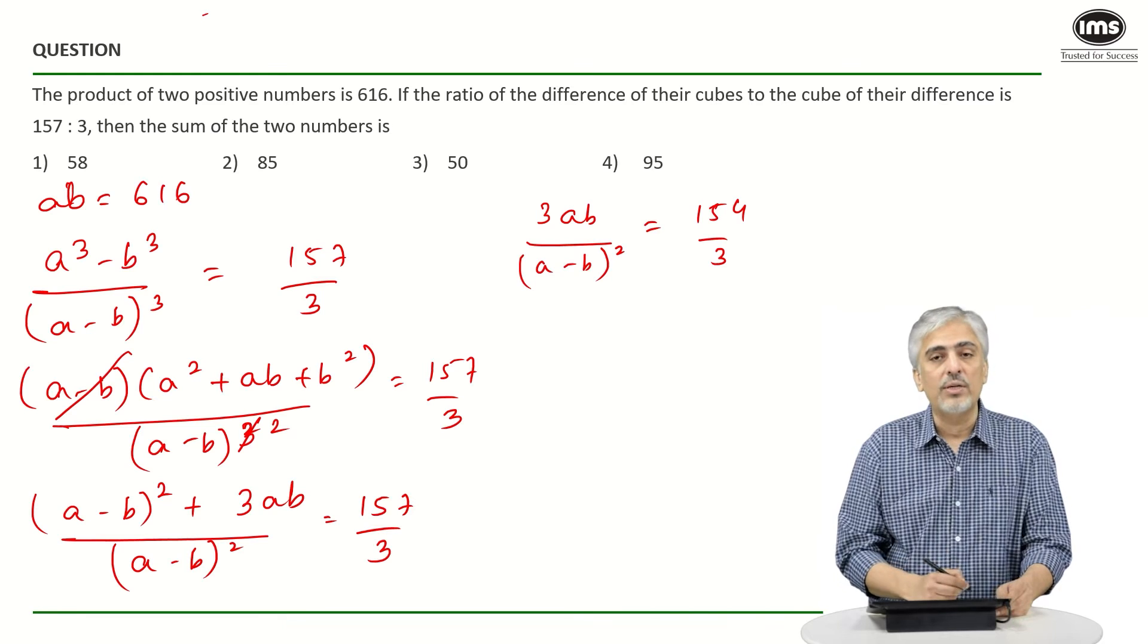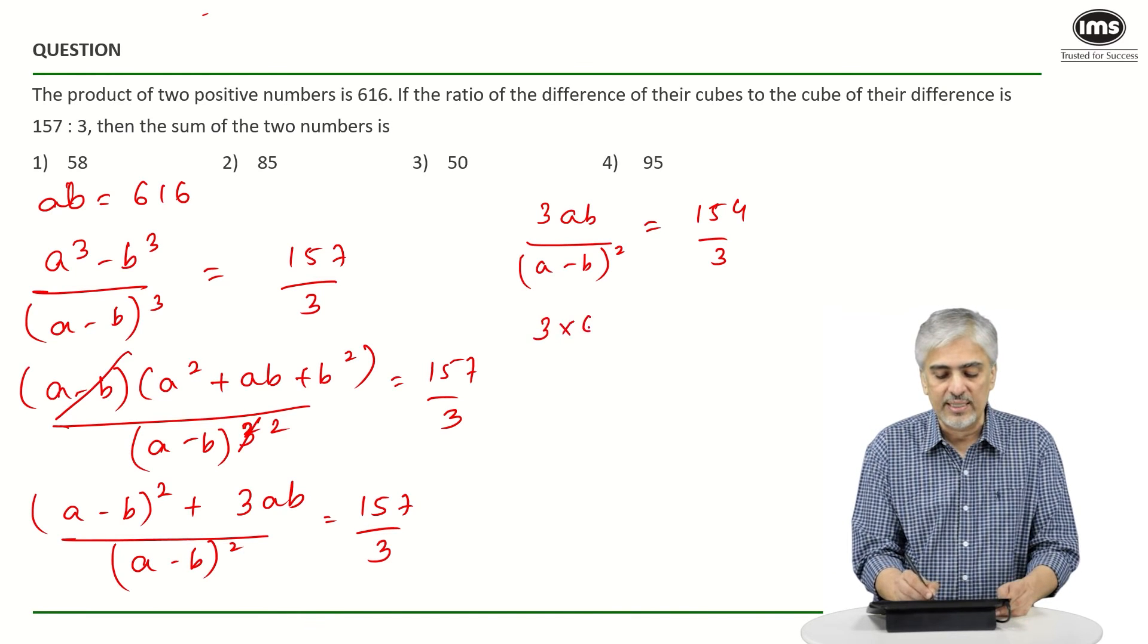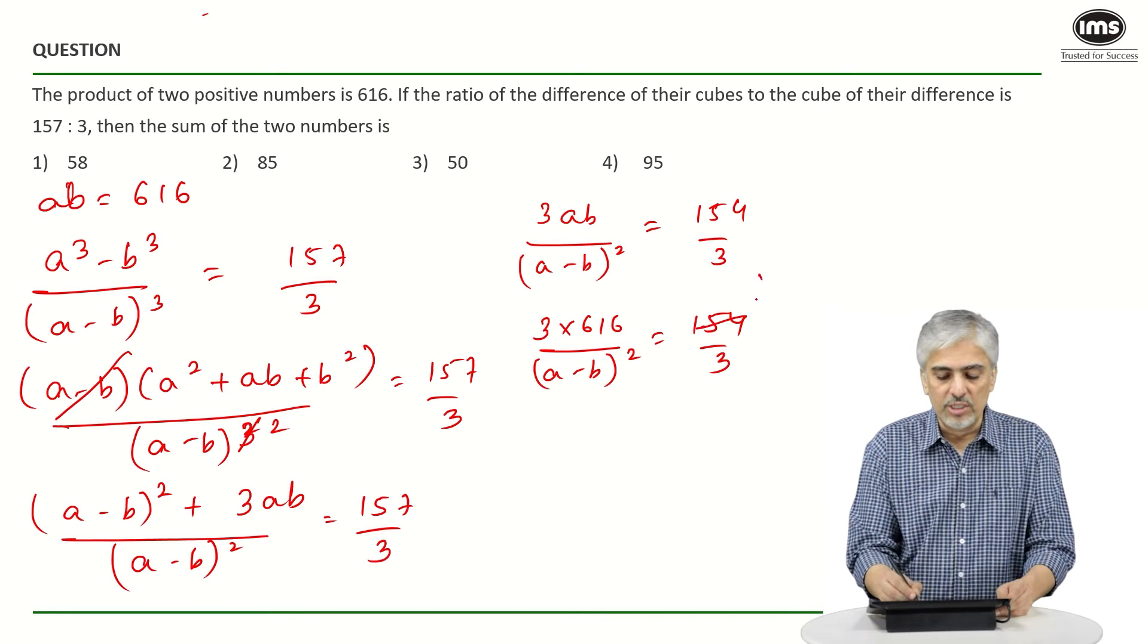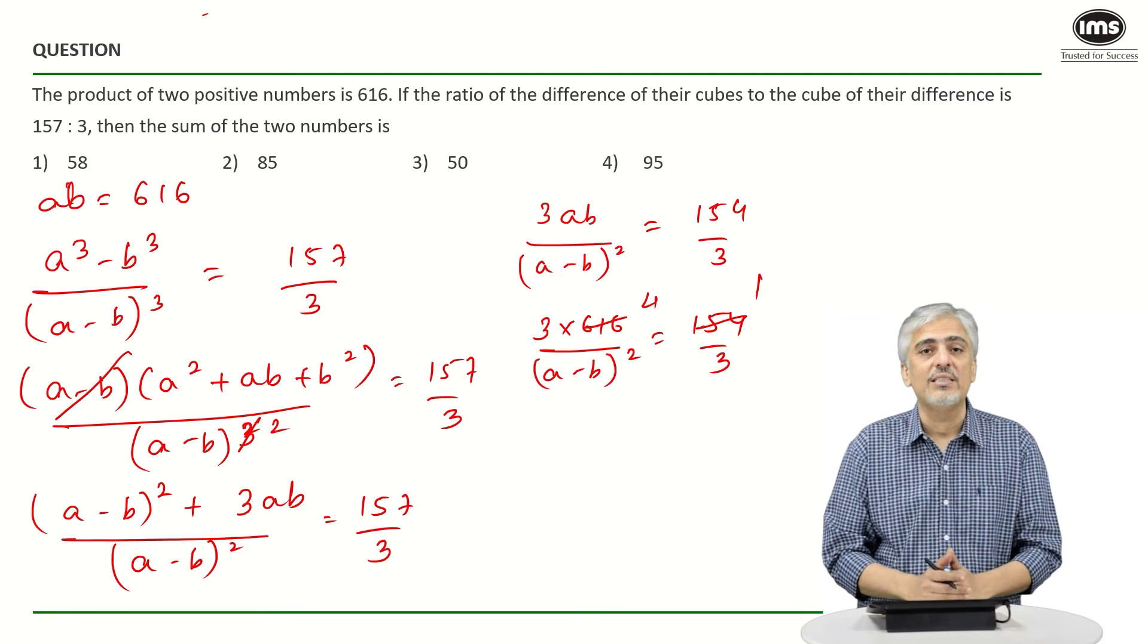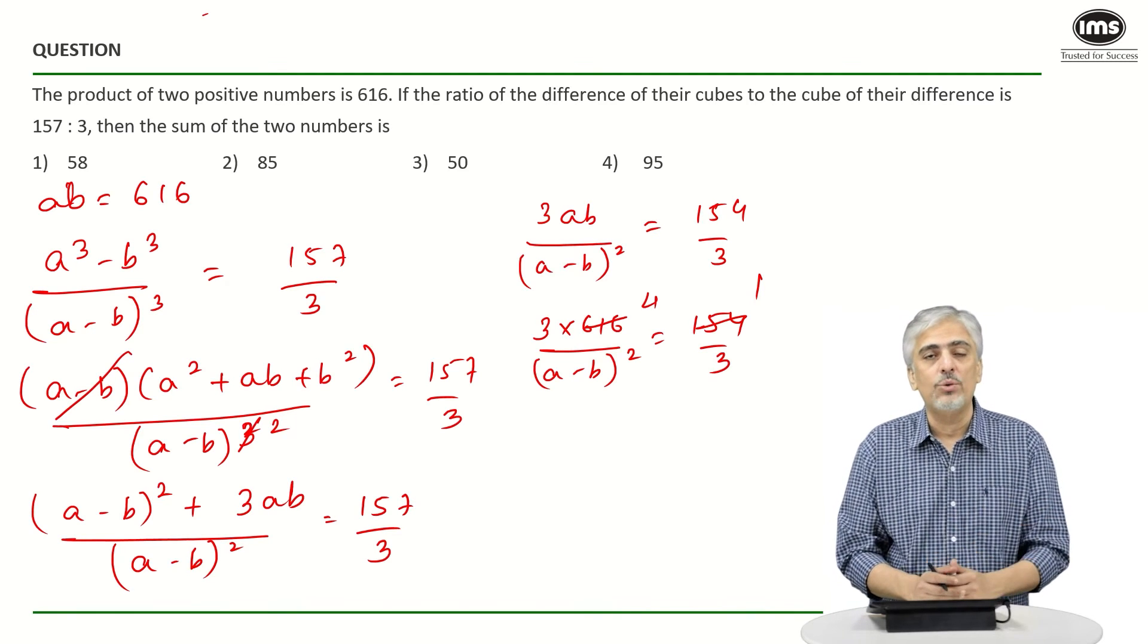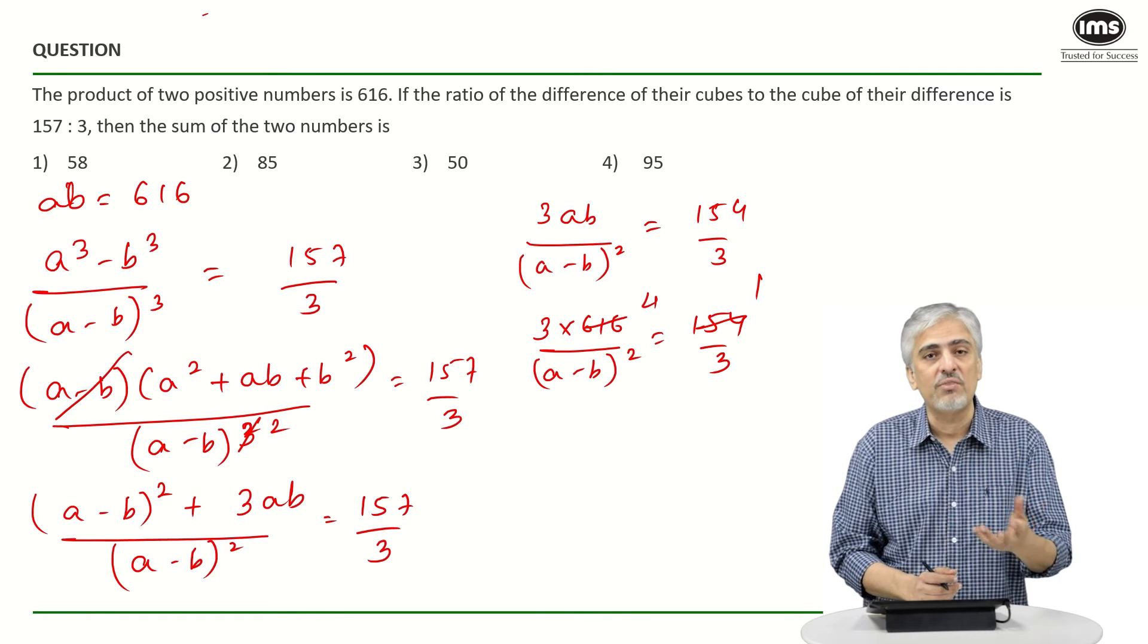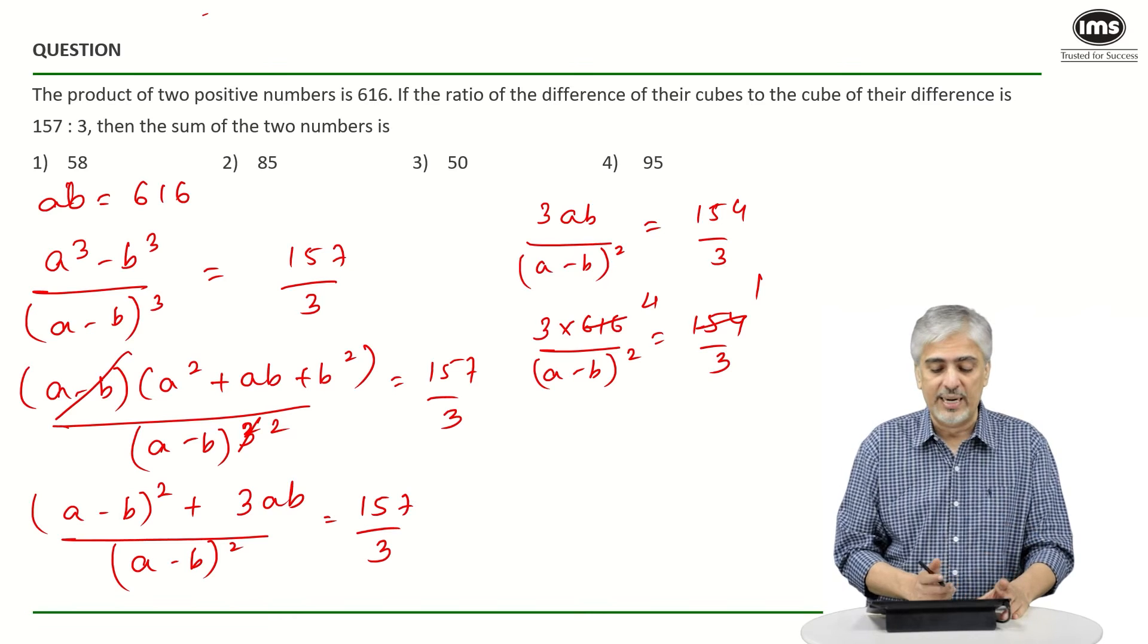So if I bring the 3 down I'll get what? And I know ab is 616. So 3 into 616 upon (a minus b)² is 154 upon 3. Should know this calculation, 154 4 size 616. This comes so many times whenever you do any circle calculations. 22 by 22 πr² you know the area is 154 area 616. This calculation comes so many times.